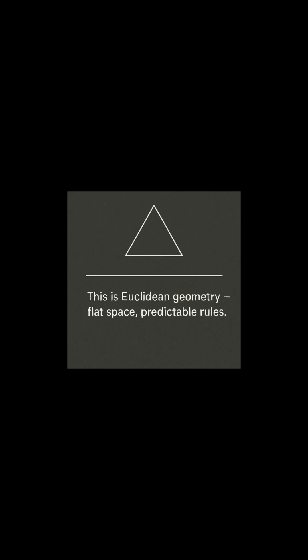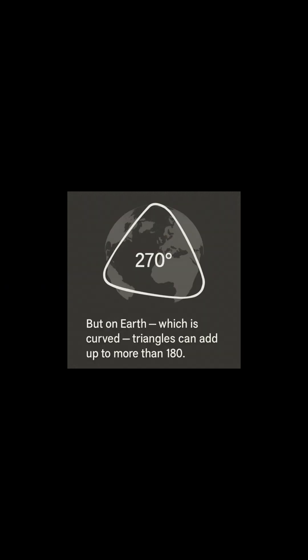This is Euclidean geometry, flat space, predictable rules. Triangles always total 180 degrees, or so we thought. But on Earth, which is curved, triangles can add up to more than 180.